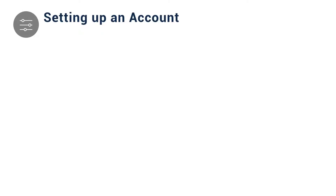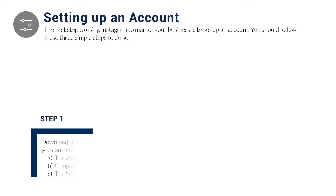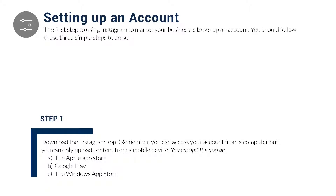Setting up an account. The first step to using Instagram to market your business is to set up an account. You should follow these three simple steps to do so. First, download the Instagram app. Remember, you can access your account from a computer, but you can only upload content from a mobile device.